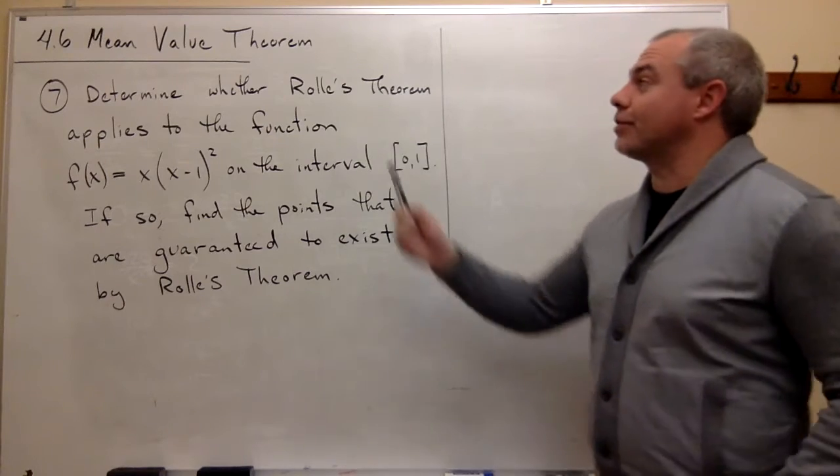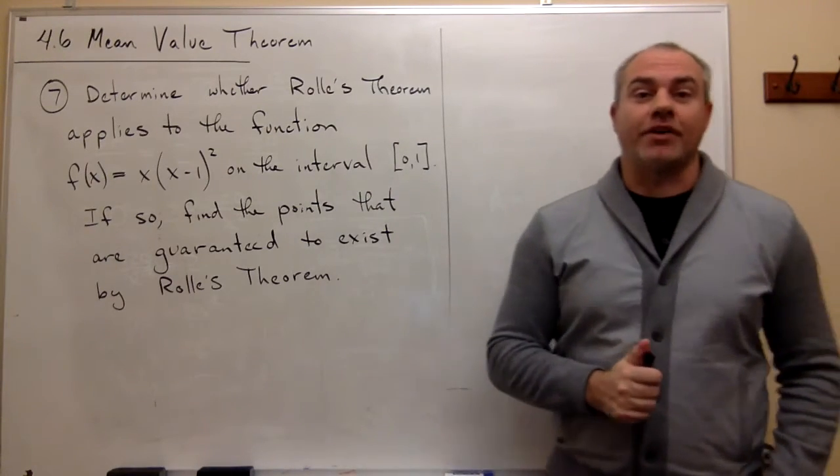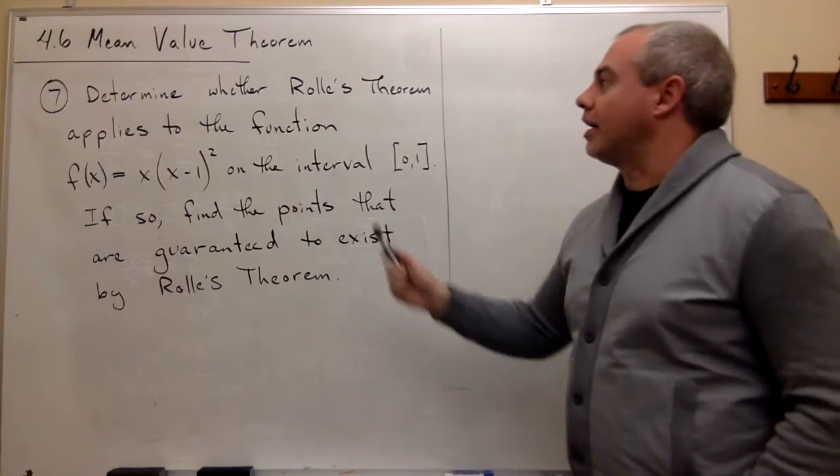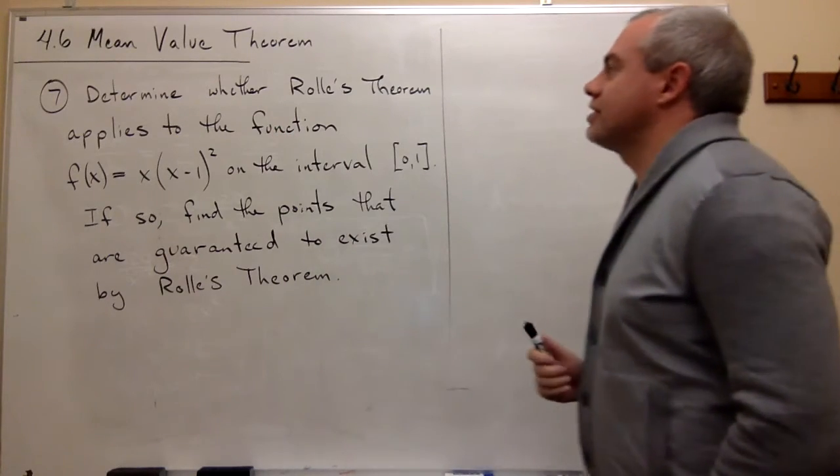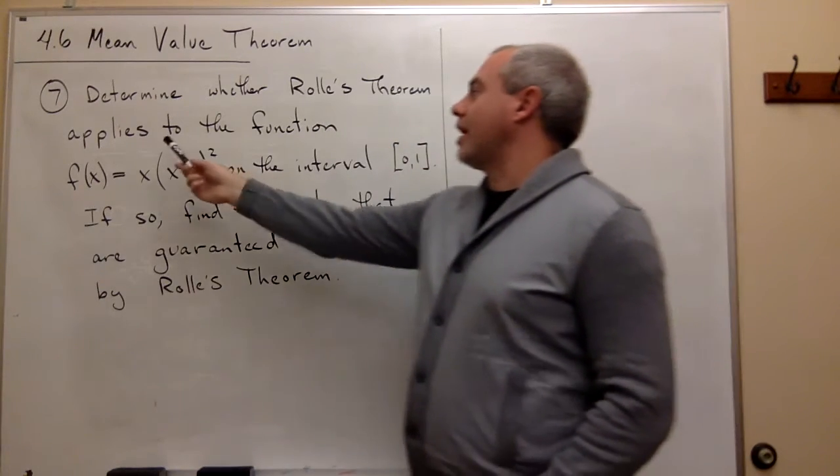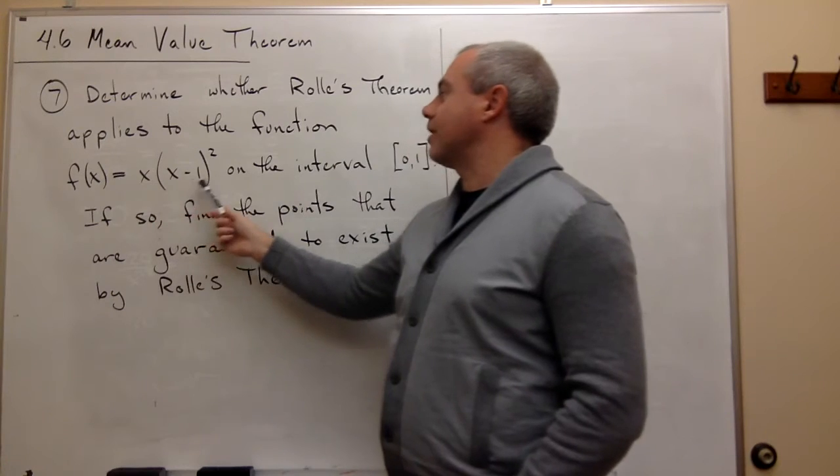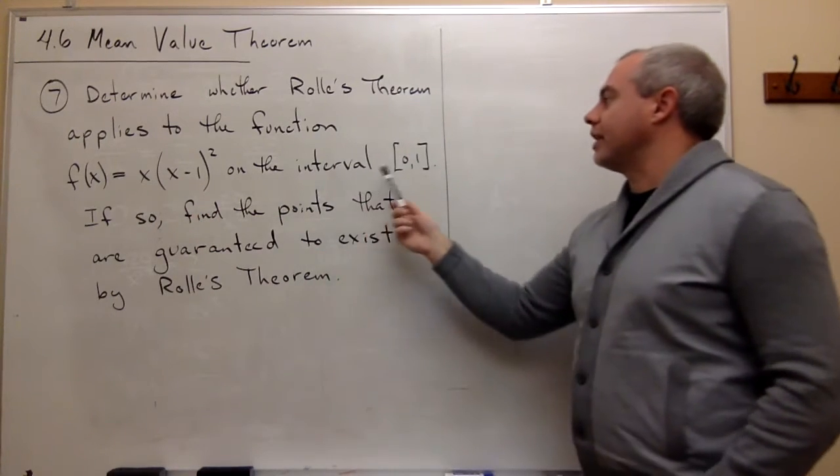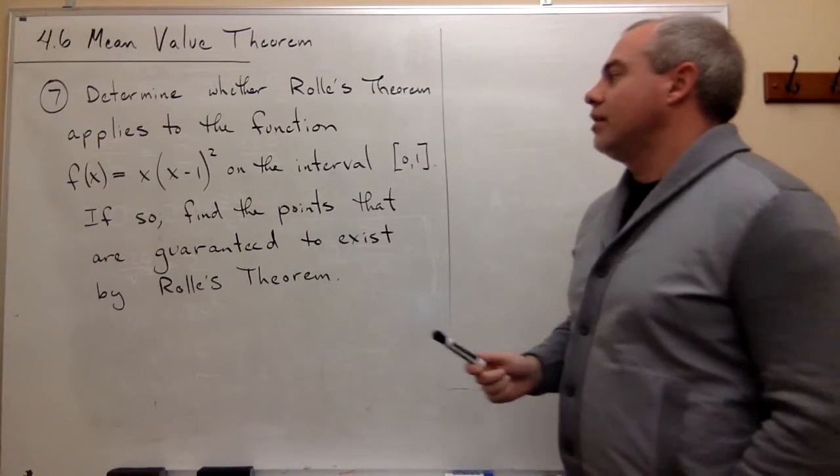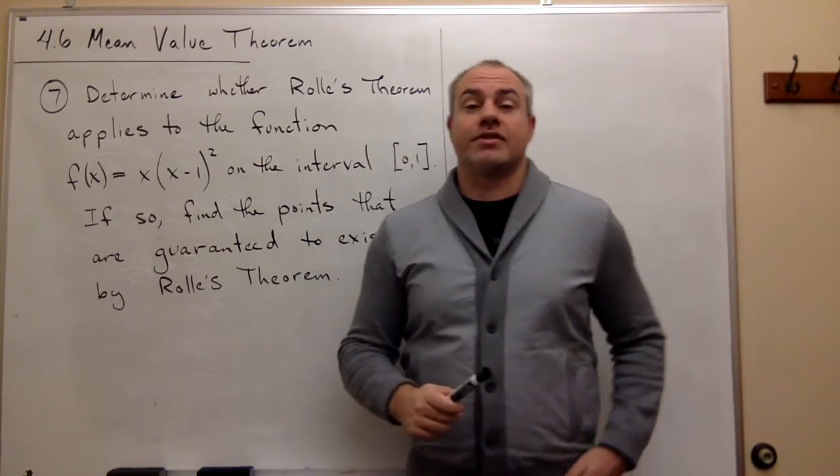Welcome back. Today, we're going to be talking about section 4.6 on the mean value theorem, and we're going to look at problem number seven, which asks us to determine whether Rolle's theorem applies to the function f(x) = x(x-1)² on the interval [0,1], and if so, find the points that are guaranteed to exist by Rolle's theorem.